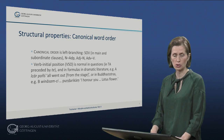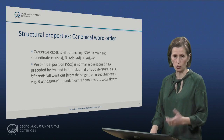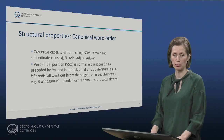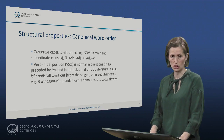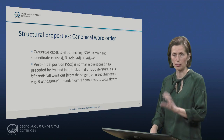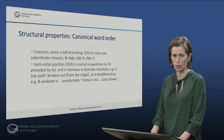Verb-initial position is also found in formulas in dramatic literature, like Tocharian A 'charponch' — they all went out from the stage — or in Buddha-stotra texts, such as Tocharian B 'winna sam chi pundaricum' — I honor you, the lotus flower.